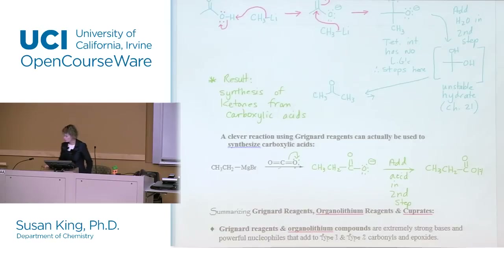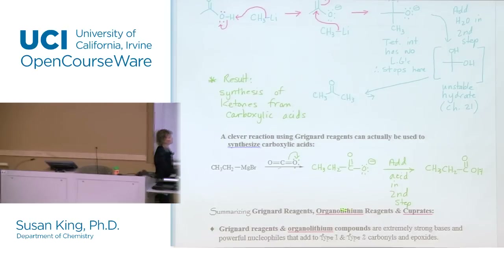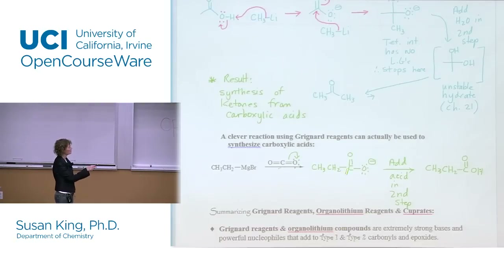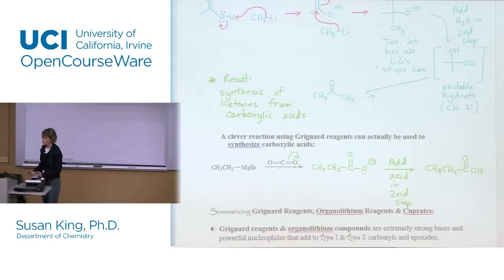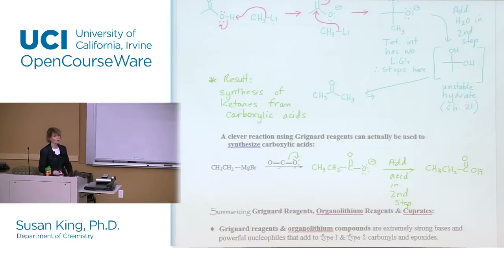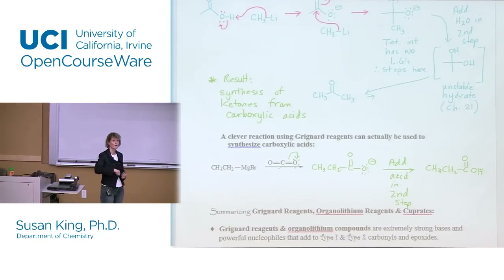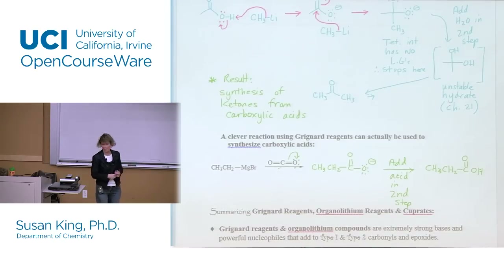Would we want to use a lithium reagent for this? We don't want to use a lithium reagent because lithium is strong enough to add to the carboxylate, so we may have side products. This is typically done using a Grignard. In the 51 labs, they used to do a lab where you'd make a Grignard and pour it right over dry ice — CO2. It's an exothermic reaction but kind of cool, and you can make carboxylic acid.